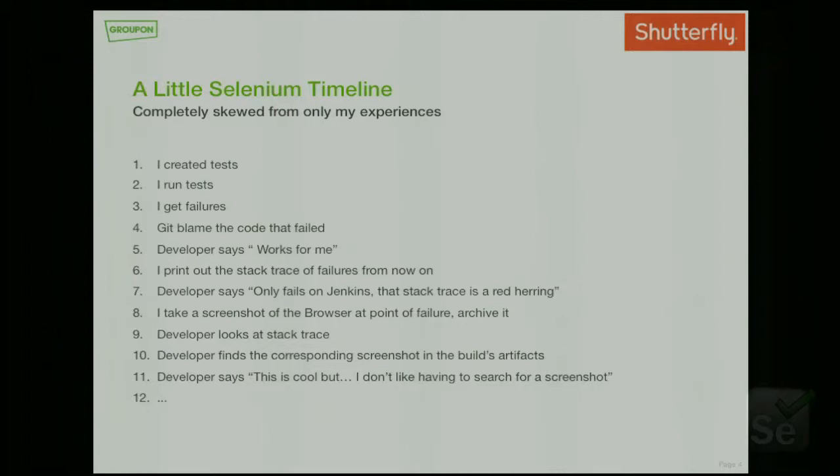If you haven't run into that, well, congratulations. So you get this failure and you're like, what's the next step? What can I do to prove that this was a real failure? So then you start printing out stack traces. On the next failure you have this really nice stack trace, you present it to a developer, and you have a little bit of data to back it up. And then they're like, okay, I see it's a failure, but this is only failing on CI, only failing on Jenkins. If I run this on my box it's still working. So basically this is like a Jenkins problem, right?